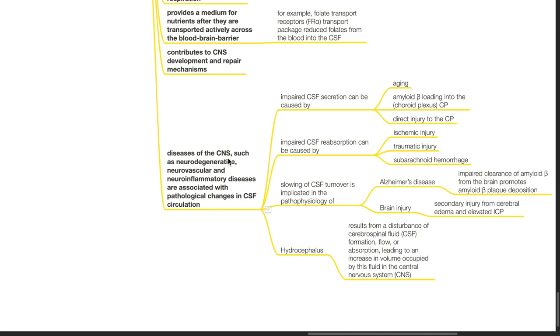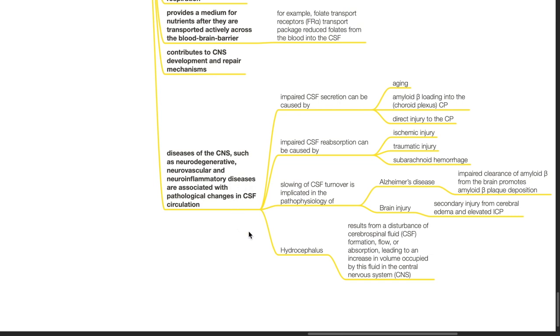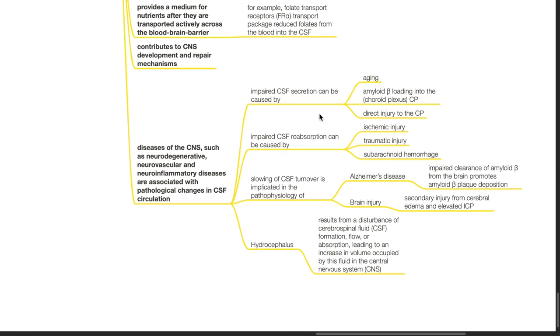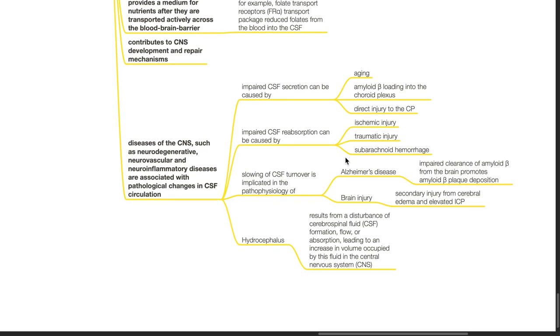Diseases of CNS such as neurodegenerative, neurovascular and neuroinflammatory diseases are associated with pathological changes in CSF circulation. Impaired CSF secretion can be caused by aging, amyloid beta loading into the choroid plexus, and direct injury to the choroid plexus. Impaired CSF reabsorption can be caused by ischemic injury, traumatic injury, and subarachnoid hemorrhage.